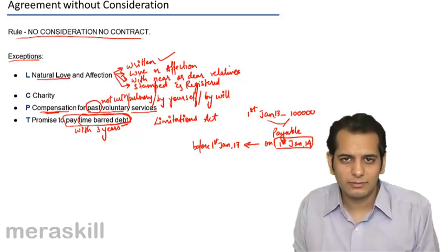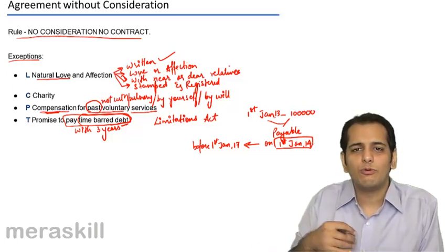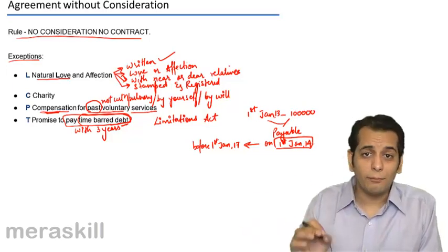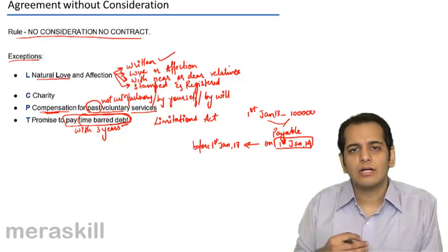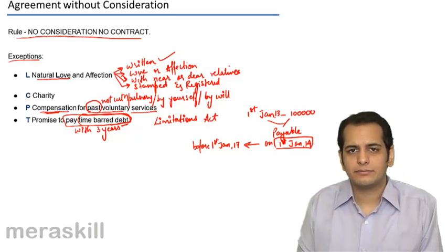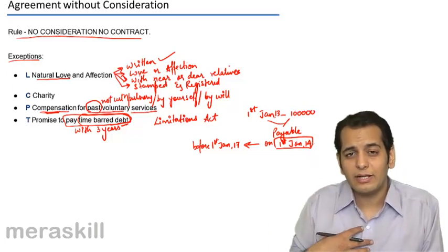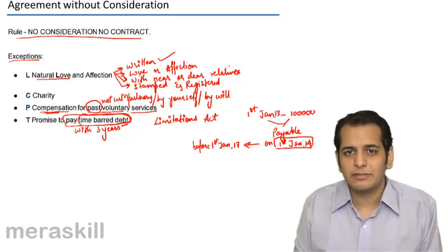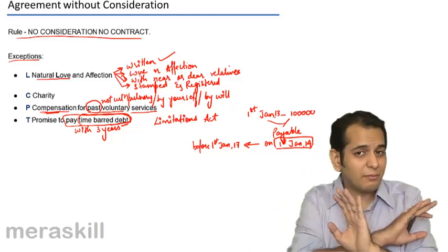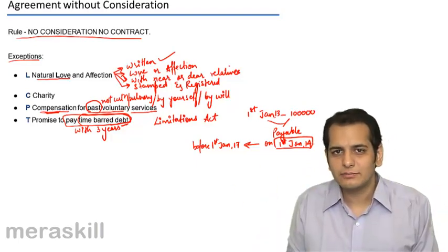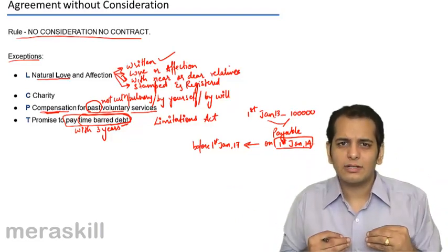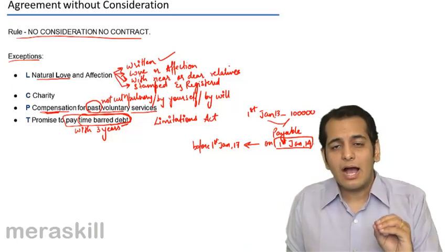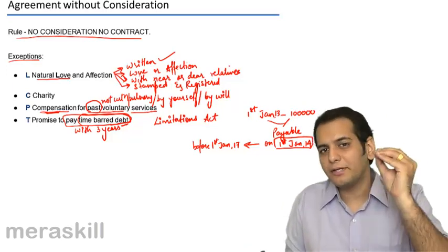However, if the debtor voluntarily on his own accord promises that yes, I will repay the debt. Here I am the debtor and I promise to you on, let's say, 1st Feb 2017. See, on 1st Feb 2017, I am not supposed to pay this debt. There is no liability on my part. Yet I am voluntarily by my own accord saying that I acknowledge this debt and I will pay you this debt.